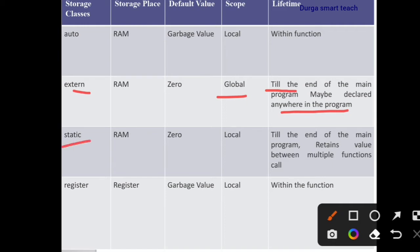The next type is static. The storage space is RAM, and the initial value is 0. The scope is local — only within the function or block. The lifetime is till the end of the main program, and static variables retain their value between multiple function calls.